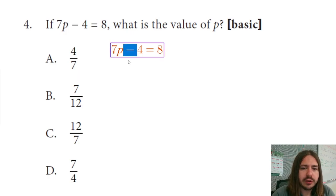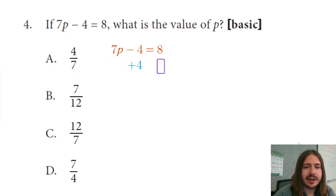The first property of equality we're going to use is the addition property. We're going to add 4 to both sides to get rid of that minus 4 on the left-hand side.